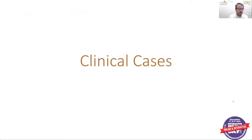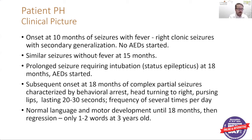We're going to go over some examples of how the MEG can be used through some brief clinical cases. Our first patient is patient PH. PH had seizure onset at 10 months of age, typically seizures with fever, described as right-sided clonic seizures with secondary generalization. No AED was started initially. However, she later had a similar seizure without fever at 15 months of age, and then a prolonged seizure requiring intubation — status epilepticus — at 18 months of age, at which time she was started on anti-seizure medication.